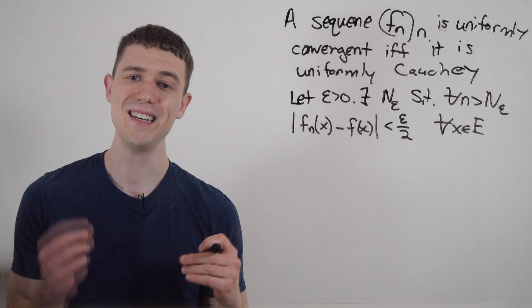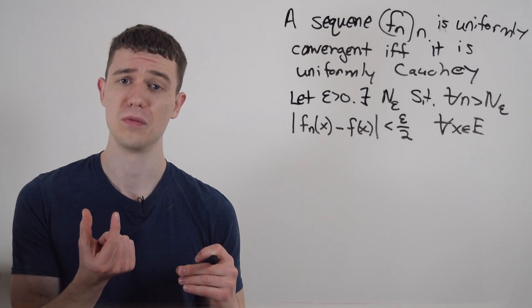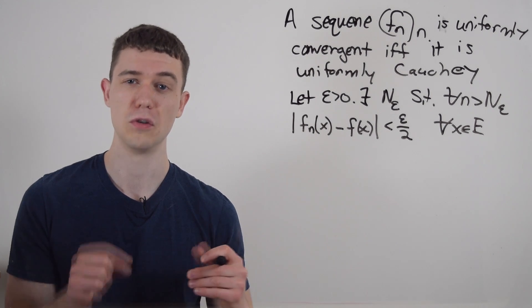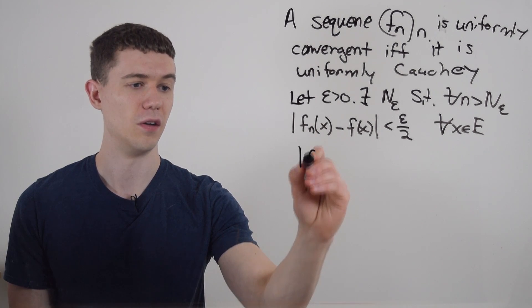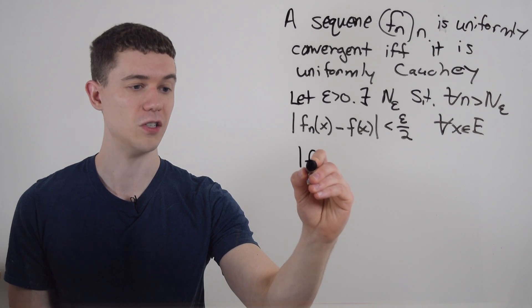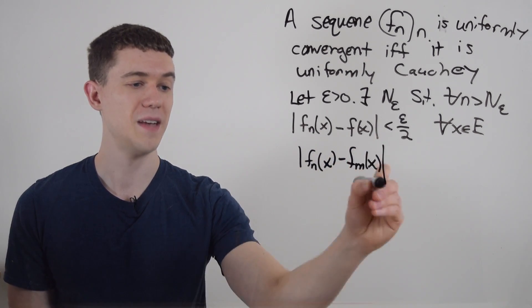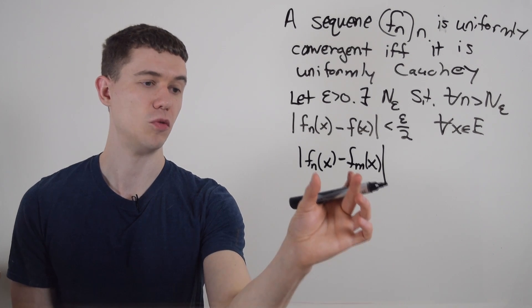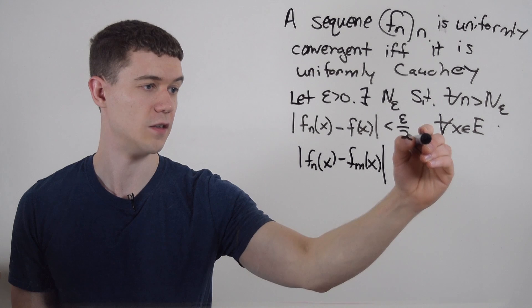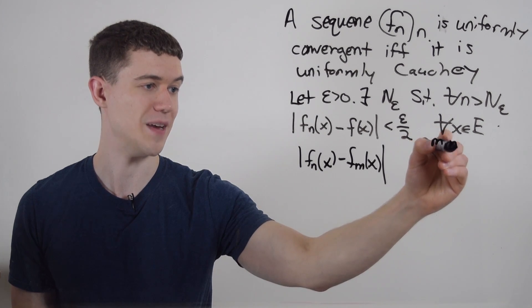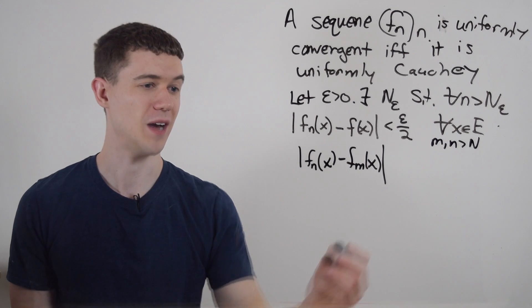If you remember what a Cauchy sequence is, basically the distance between two terms can be arbitrarily small. So for a uniformly Cauchy sequence of functions, I want to show basically the same thing. The distance between two of the functions in the sequence is arbitrarily small, is less than epsilon. So what I'll do is I'll let m and n be greater than this capital N here, and we'll see what happens.